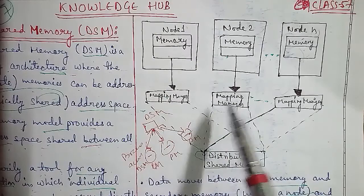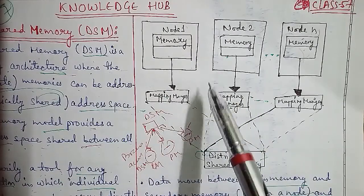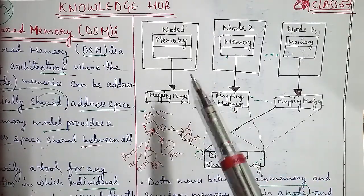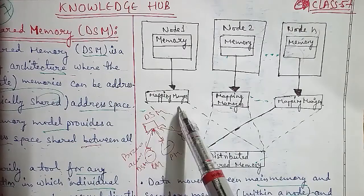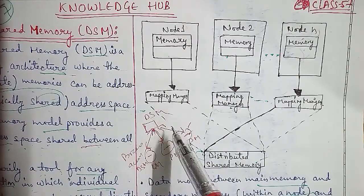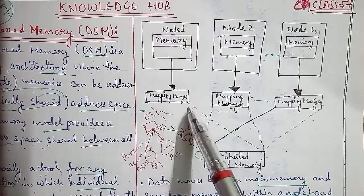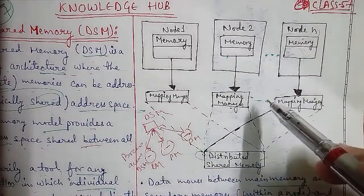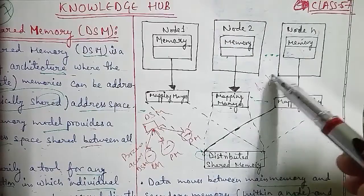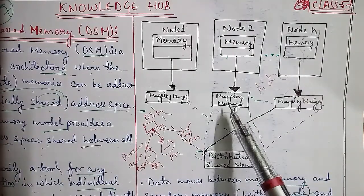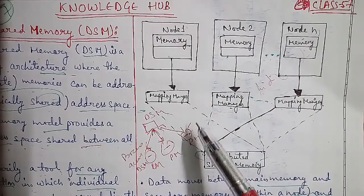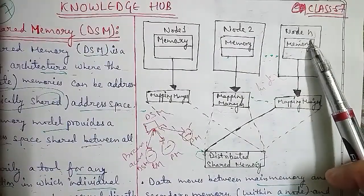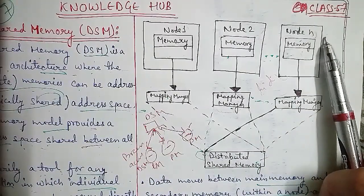Each node consists of one or more central processing units and a single memory unit. Memory is passed from one node to another via simple message passing over the communication channel. The distributed shared memory abstraction - and abstraction means hiding the underlying complexity - puts forward a large memory space to all the CPUs of different nodes. This memory exists virtually, as a combination of all the memories of all the nodes.